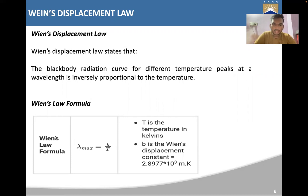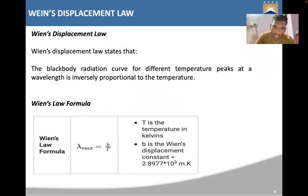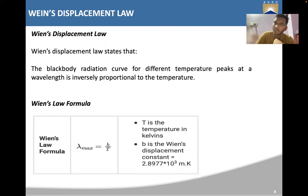Wien's Displacement Law states that the black body radiation curve for different temperatures peaks at a wavelength that is inversely proportional to the temperature. The formula is: lambda-max equals b divided by T, where b is Wien's displacement constant (2.897 × 10⁻³ meter-kelvin) and T is the temperature in Kelvin.